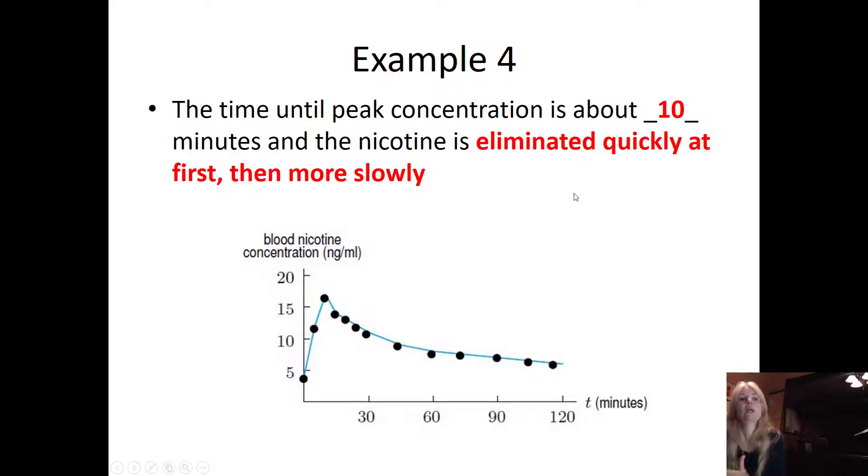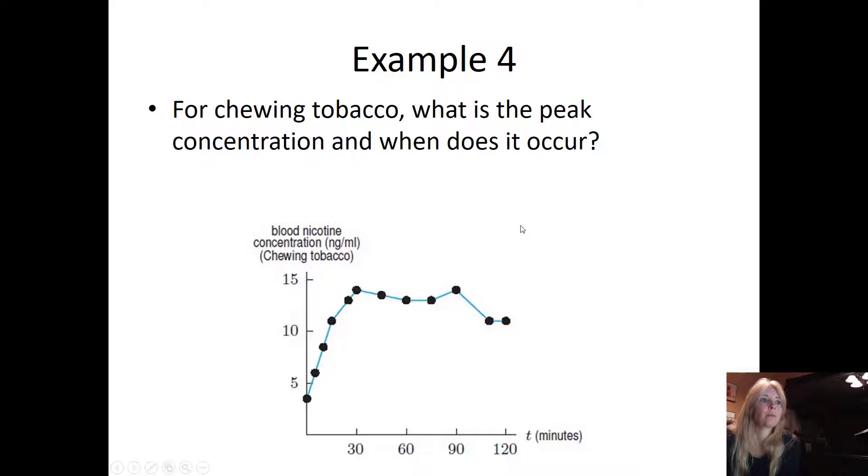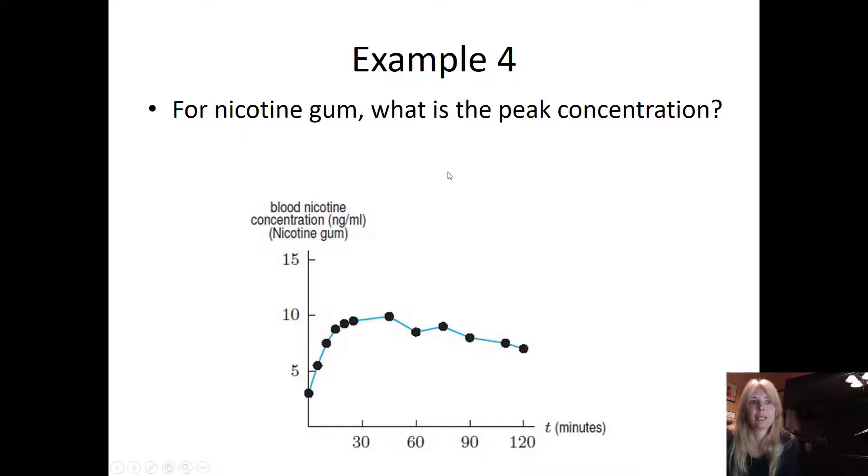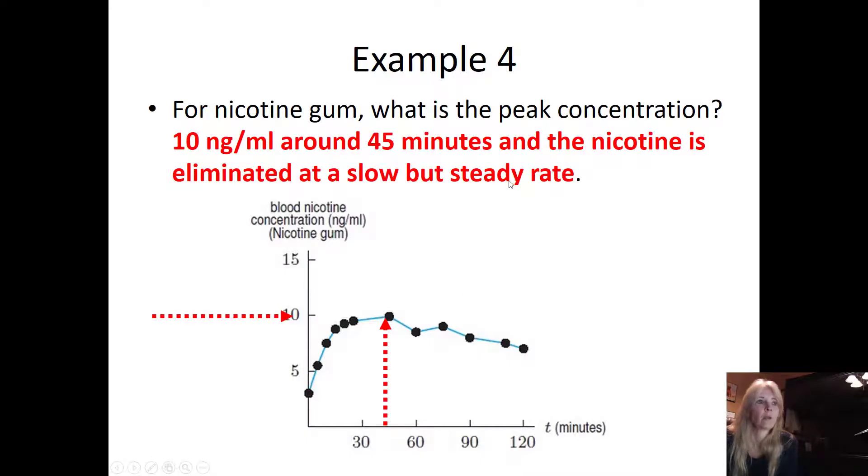For chewing tobacco, what is the peak concentration and when does it occur? My very first peak is at 30 minutes, and then it's eliminated at a slow and erratic rate because it in fact starts to go back up and then comes back down. For nicotine gum, the peak concentration looks to be at 45 minutes at 10 nanograms per milliliter, and is eliminated at a slow but steady rate.